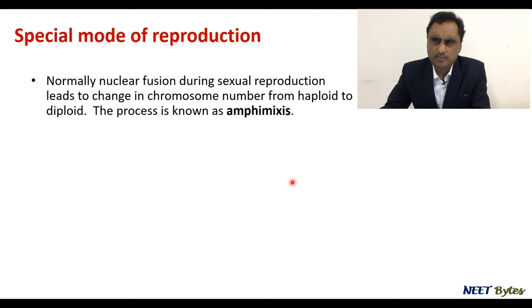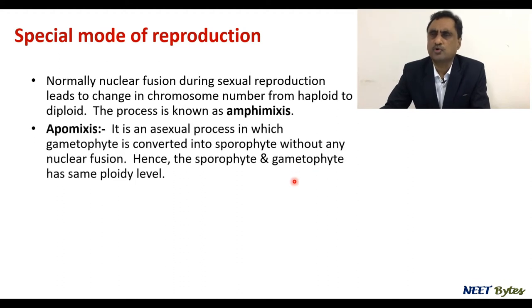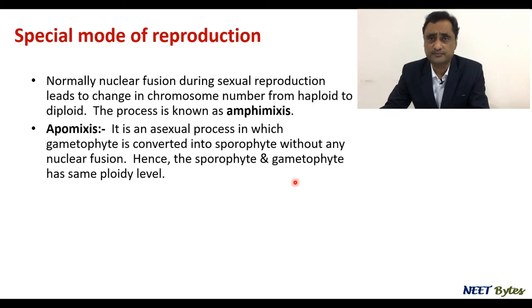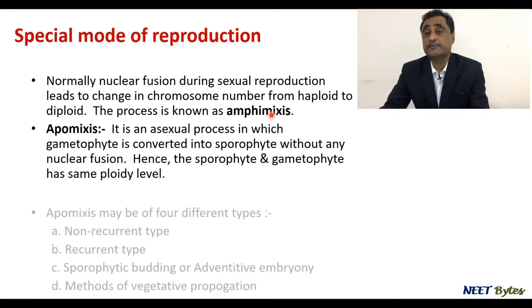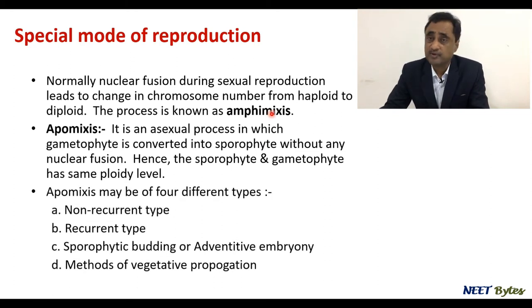Hello friend, this is Dr. Pankaj Kumar, your mentor for today's session of biology in which we will be talking about a special mode of reproduction. Normally, when we talk about sexual fusion, male and female gametes unite and the haploid number becomes diploid. This entire event is called amphimixis — amphimixis means sexual reproduction.